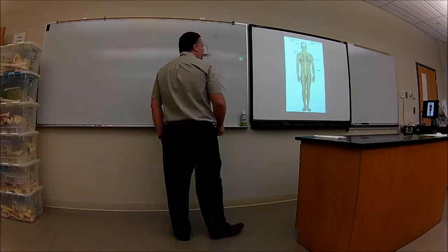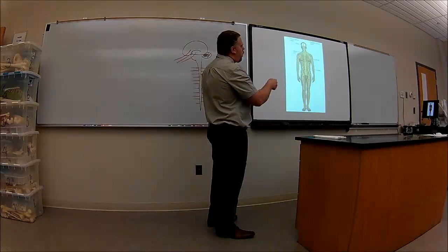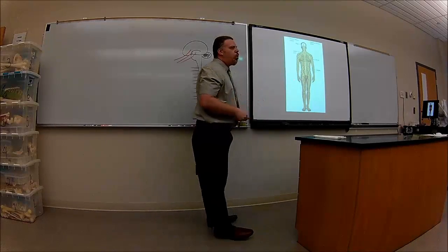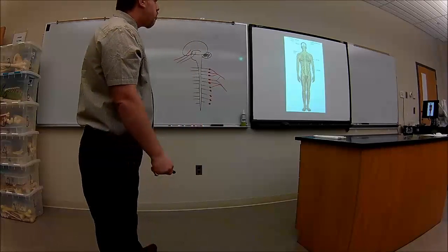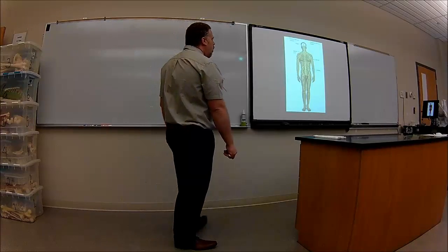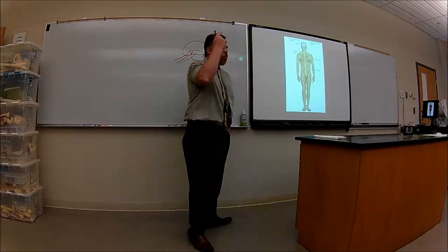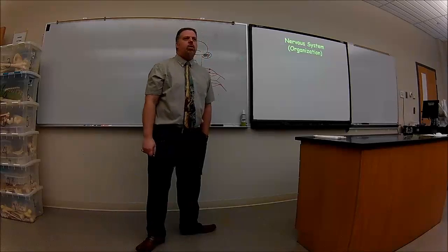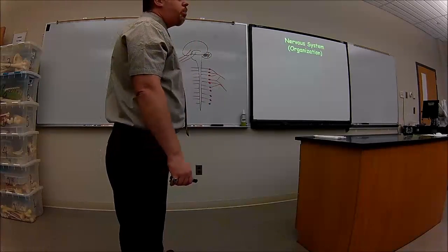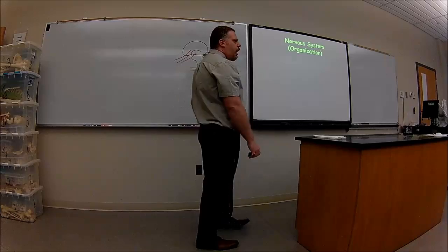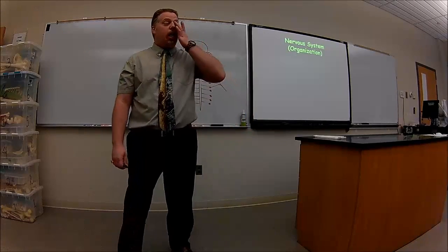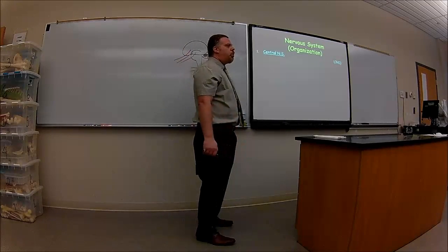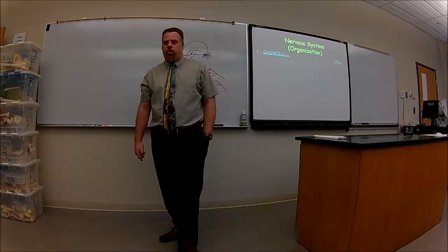The central nervous system is the brain and spinal cord — what I drew in black. What I drew in red is the peripheral nervous system, which is everything else — all the wires coming out of the breaker box to the different rooms. The nervous system is broken down into the central nervous system and the peripheral nervous system. The peripheral nervous system is also broken down into two things.